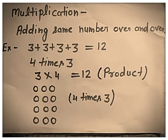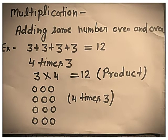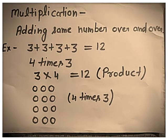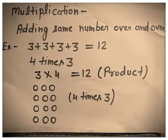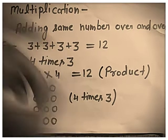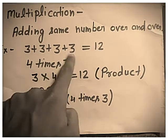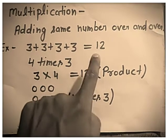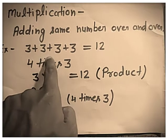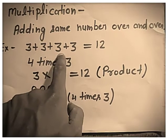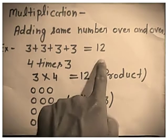So, what is multiplication? Adding the same number over and over is called multiplication. See the example: 3 plus 3 plus 3 plus 3 is equal to 12. 3 plus 3 is 6, 6 plus 3 is 9, 9 plus 3 is 12.